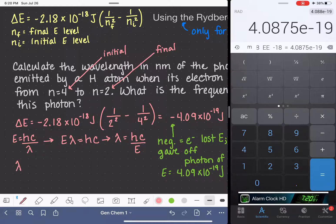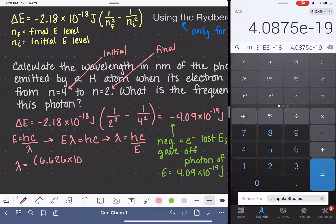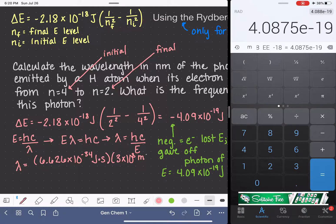And now I can just plug my numbers in. H, Planck's constant, 6.626 times 10 to the negative 34 joules seconds. C, the speed of light, 3 times 10 to the 8th meters per second.